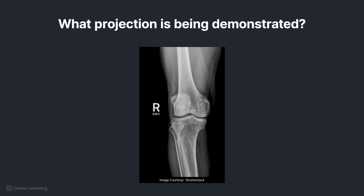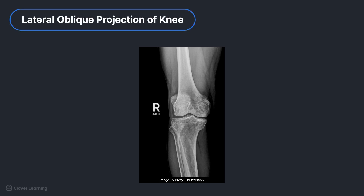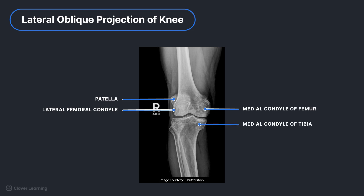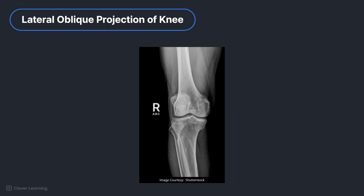Can you tell what projection of the knee is being demonstrated here? Did you say lateral oblique projection of the knee? Let's find out how we can tell it has external rotation. Like the other projections, the distal femur and proximal tibia and fibula are demonstrated, but this time the patella is superimposing the lateral femoral condyle, and the medial condyle of the femur and tibia are shown in profile. Also, in this projection, the proximal fibula should be superimposed by the proximal tibia.